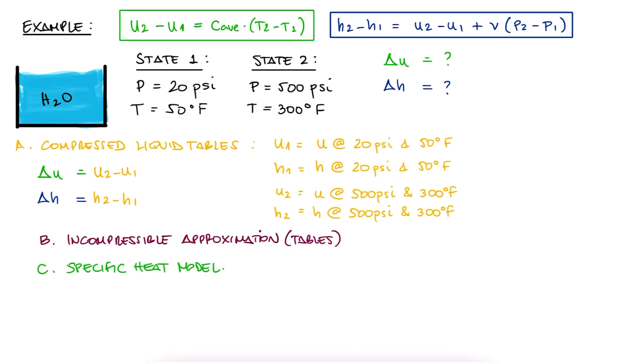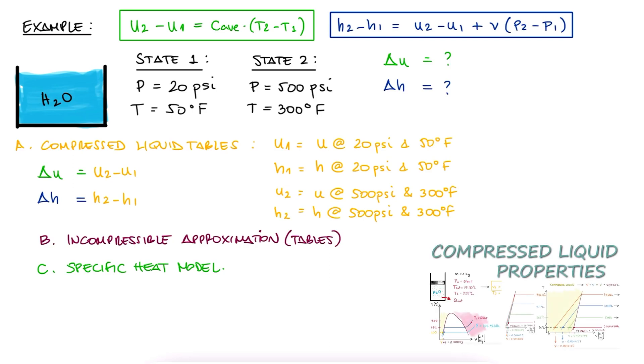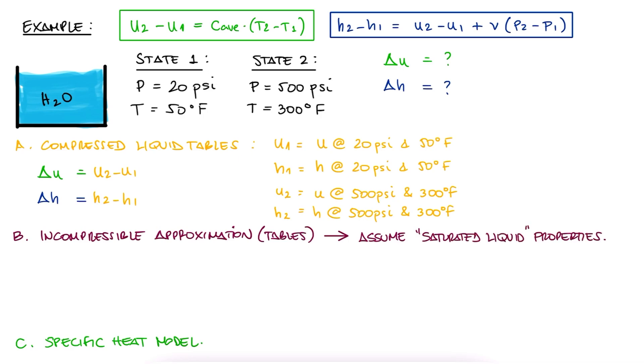The second method is to recall what we learned three lectures ago, in that six-minute lecture, link below, where we showed how we can just assume saturated liquid properties for compressed liquid substances. So, in this case, we'd write down uf and hf for 50 degrees Fahrenheit as u1 and h1, and uf and hf for 300 degrees Fahrenheit as u2 and h2.